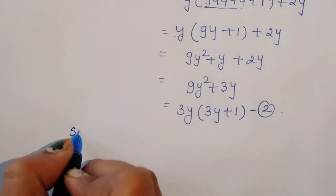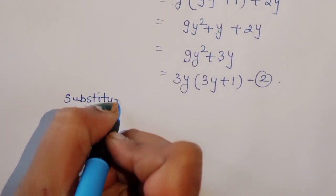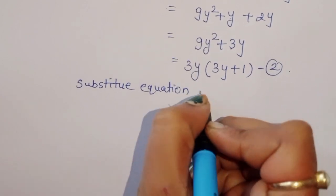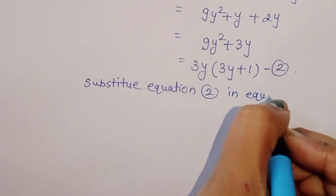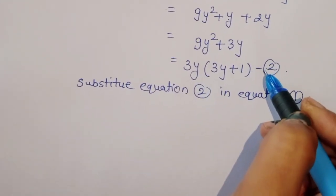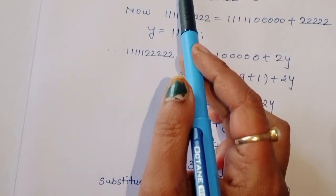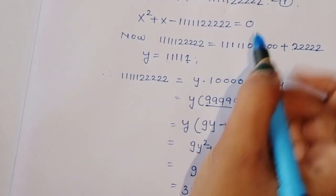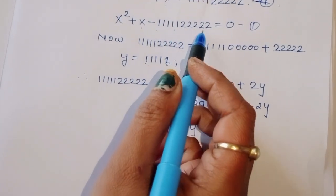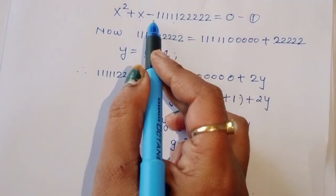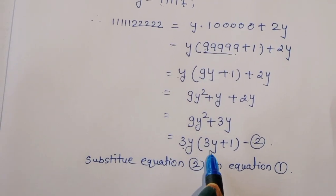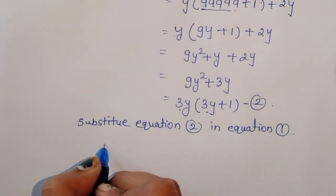Now we can substitute equation 2 into equation 1. Equation 1 is x squared plus x minus 1111122222 equal to 0. We now know this value — 5 times 1 and 5 times 2 — equals 3y times 3y plus 1.